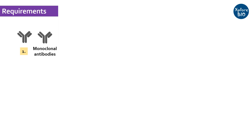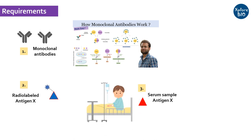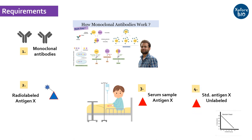Now let's look at the requirements for RIA. Suppose you want to detect antigen X in the patient sample. First, you must develop monoclonal antibodies for this antigen. The monoclonal antibodies are developed in an animal system and are highly specific for antigen X. Next, you need to have radiolabeled antigen X for signal detection. You also need a patient serum sample to be checked for the presence or absence of antigen X — this will be the unlabeled antigen X. Additionally, you will need a known quantity of unlabeled antigen X as a standard for plotting a standard curve.